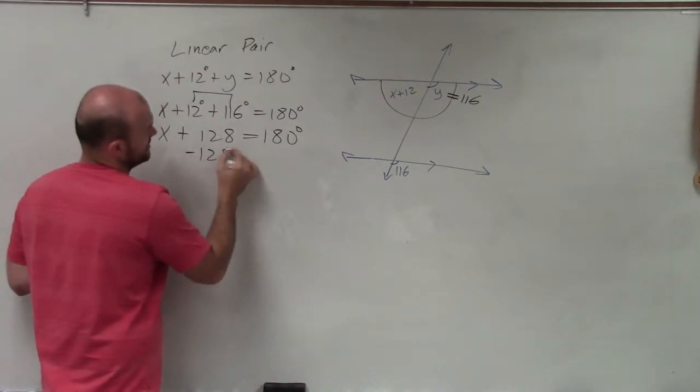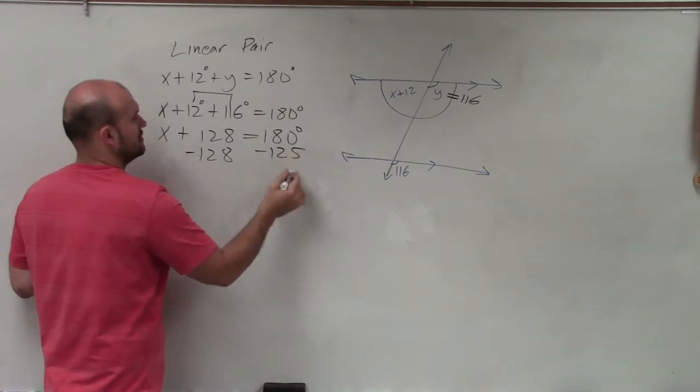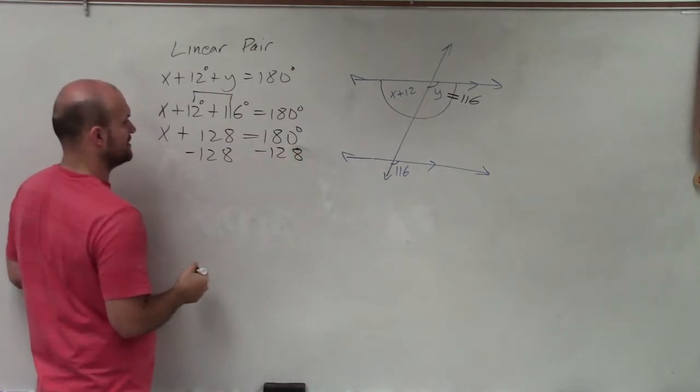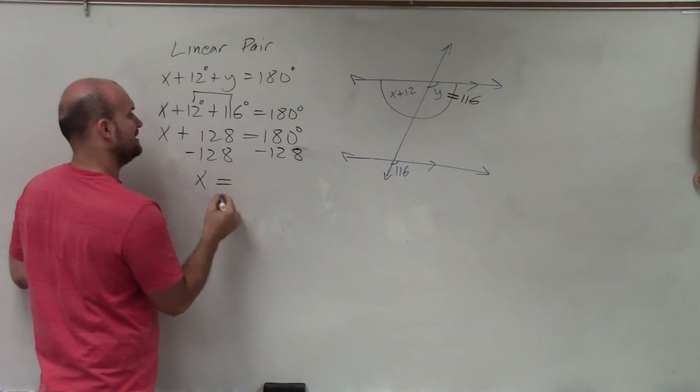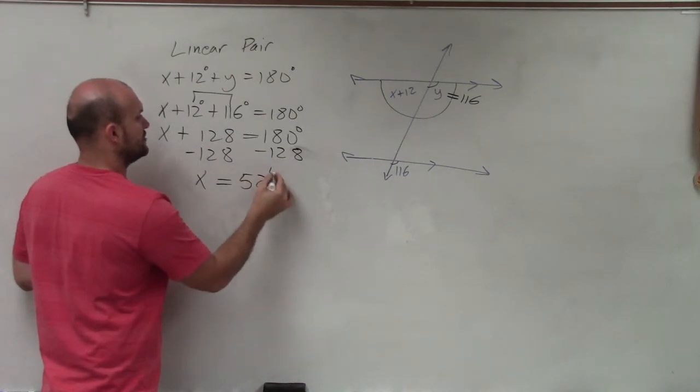Now, to solve for x, I subtract 128. Why 5 came in there, I don't know. I subtract 128, and I get x = 52°.